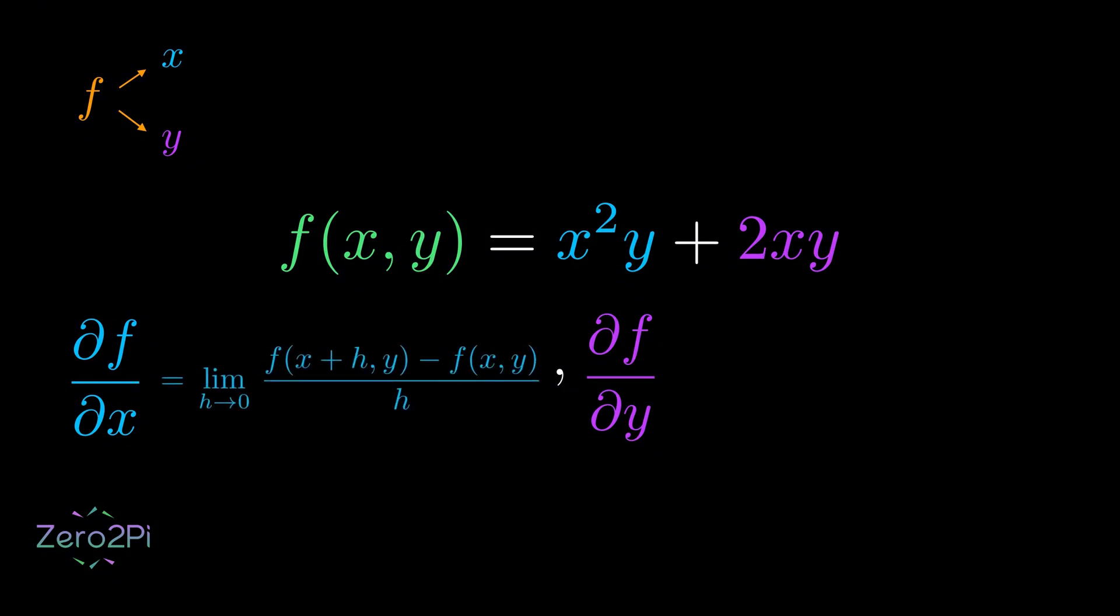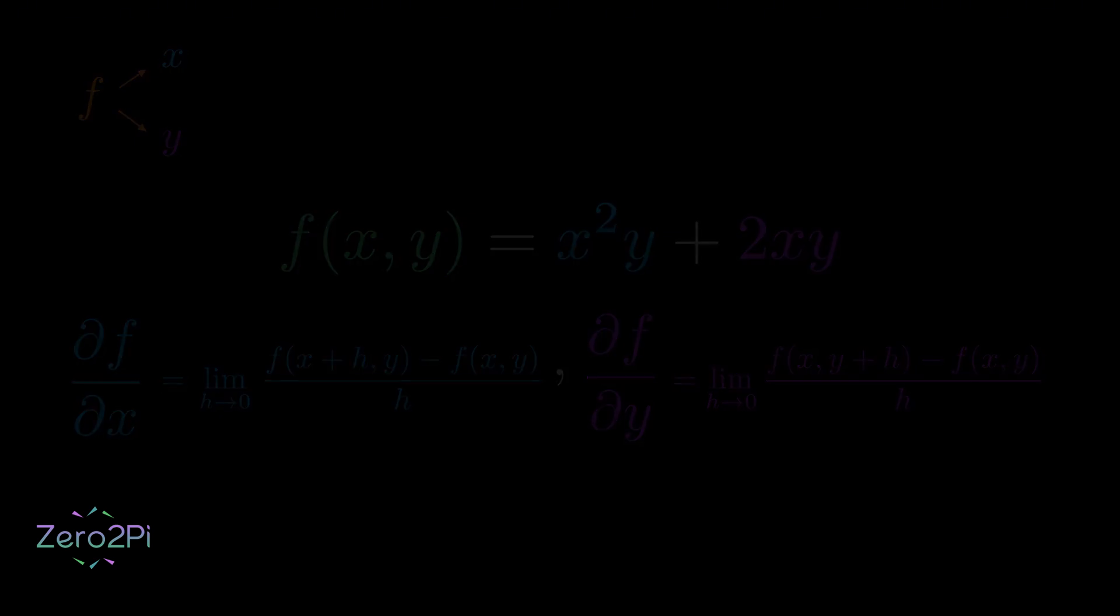And look at the definition. It's almost identical to the classic derivative. We are nudging x by a tiny amount h, but notice that y just stays y. It's treated as a constant. Same thing for y. We change y a tiny bit and keep x as a constant. Let's see this in a graph for better understanding.